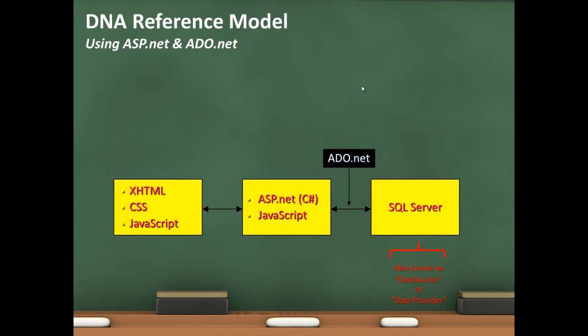The SQL Server on the right side is referred to as our data source or data provider — who is providing the data to our application. When we configure an application, we create what's called a connection string. That connection string specifies the type of server you're talking to, your login, your password, and how the server expects to get its data. The ADO.NET component does the translation on our behalf. If I wanted to switch from SQL Server to Oracle, I would just modify that ADO.NET connection.